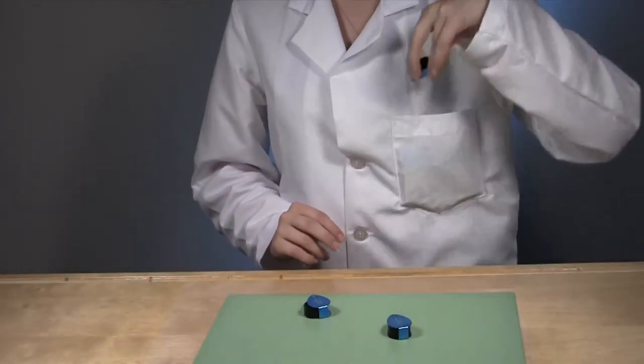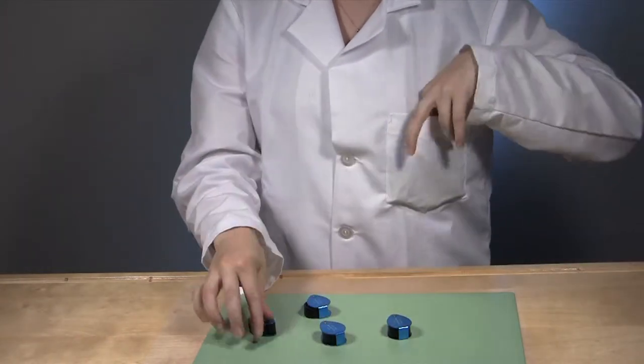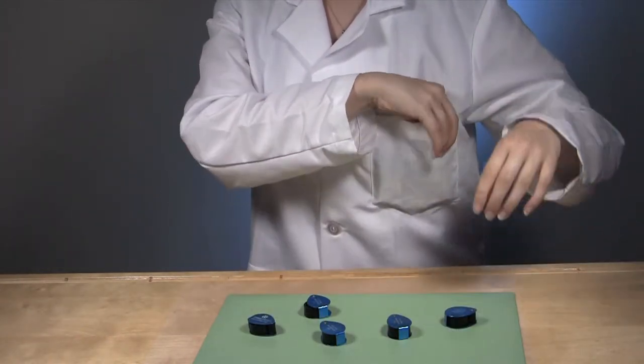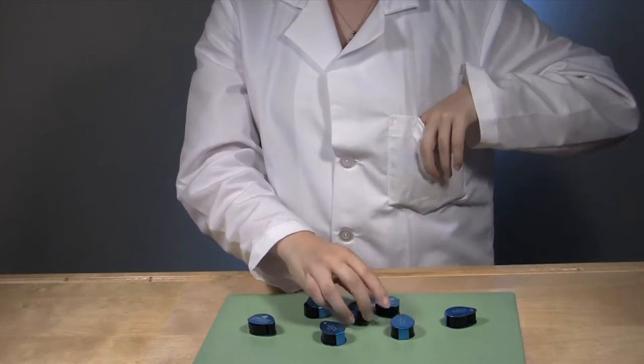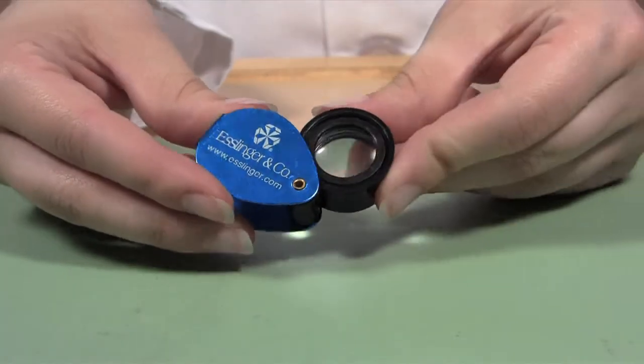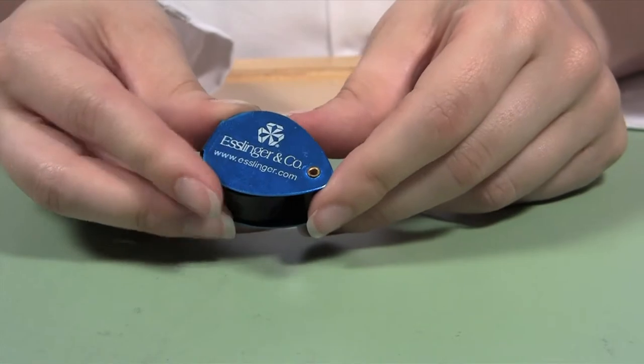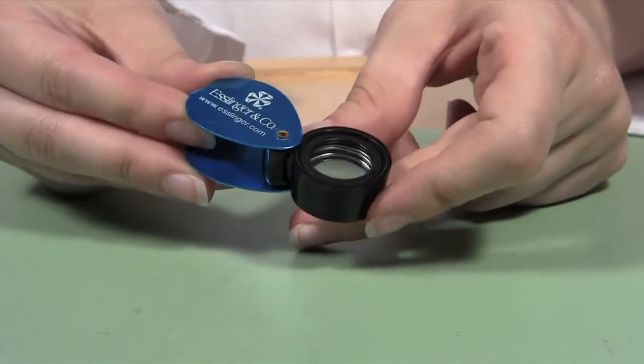No matter the occasion, you'll find that this jeweler's loop will meet all of your needs. It's small enough to fit easily in your pocket, so you'll never be without magnification. The aluminum cover is attached to provide optimal protection to the lens at all times.